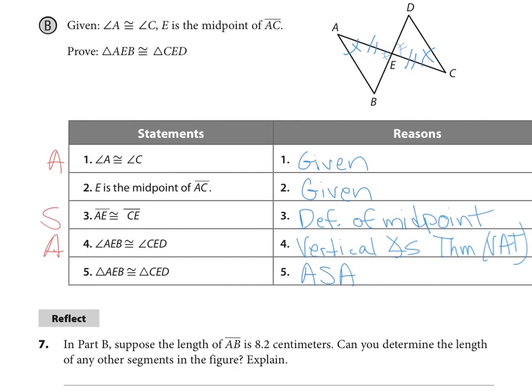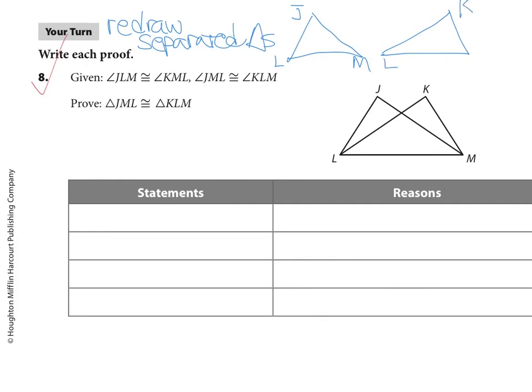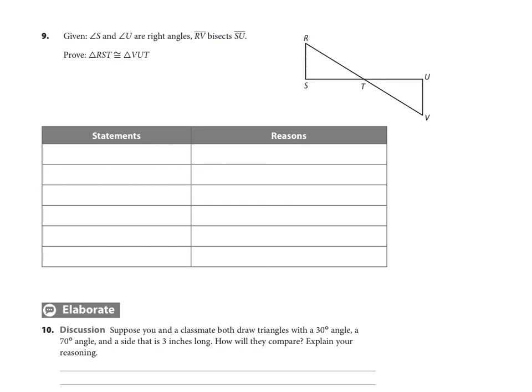Moving down the page to number 8, your turn. See what you can do with this proof, number 8. I would suggest that you might think about redrawing the separated triangles, taking them from overlapping. So you've got JLM going this way and KML coming this way. See what you can do with markings when they're separated. I think that'll help you as you fill in your statements and your reasons. See what you can do, and we'll see you guys next time.